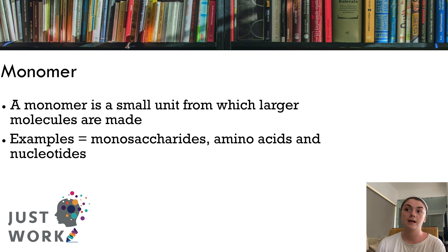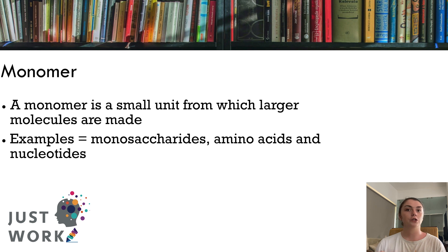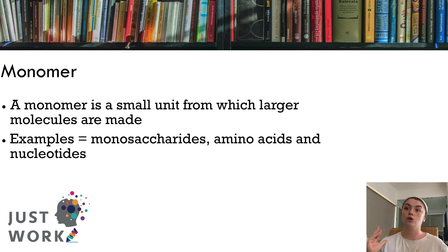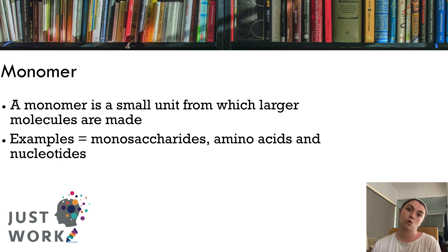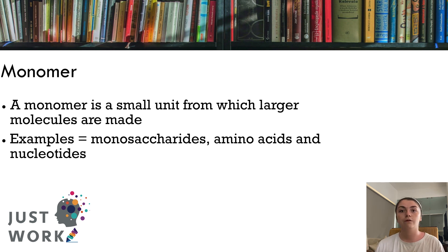So what is a monomer? A monomer is a small unit from which larger molecules are made — the building block of a really long unit. Examples of these are monosaccharides, which form long carbohydrates; amino acids, which form long proteins; and nucleotides, which form DNA. So these are some biological examples.